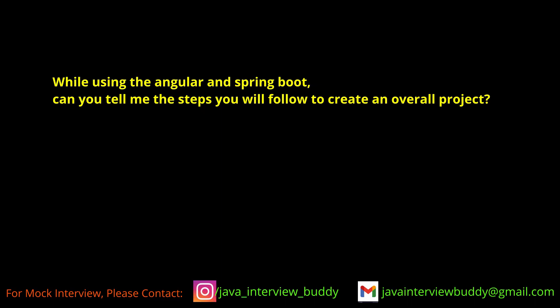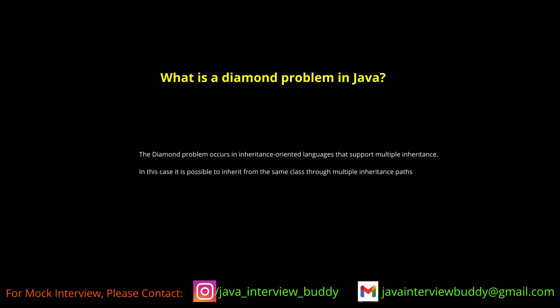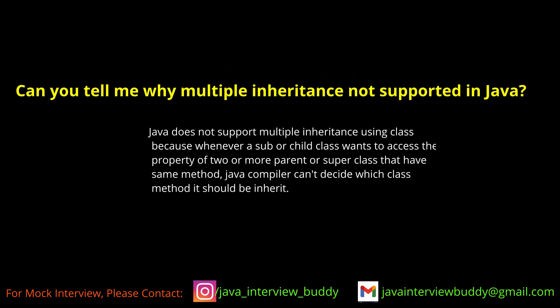The diamond problem in Java refers to the ambiguity that arises when a single class extends multiple classes that have the same method — this causes an ambiguity error. Multiple inheritance is not supported in Java for classes; you can only extend one class. However, you can achieve multiple inheritance through interfaces, since implementing classes provide their own implementation.